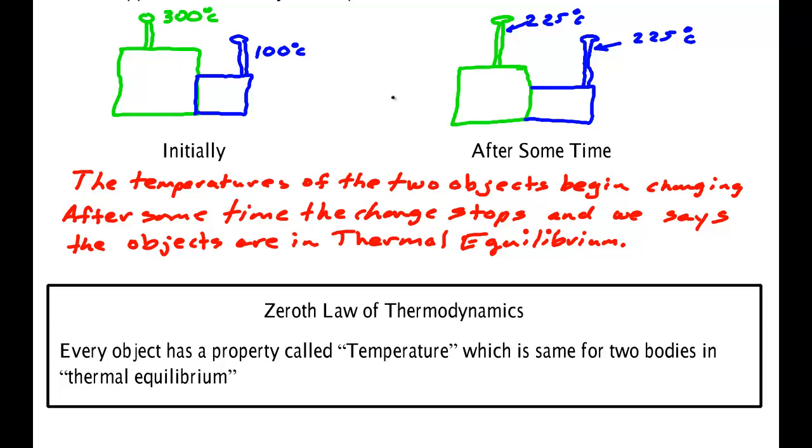But what is definitely the case is that the temperature here of this object and the temperature here is the same. Call that TE. And the temperature here T1 and that temperature were not the same. So eventually at some time, if you wait long enough, these two objects will have the same temperature. And that's called the zeroth law of thermodynamics.